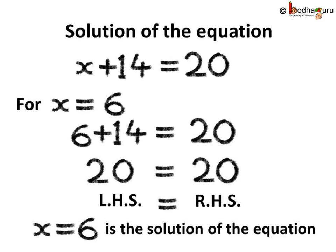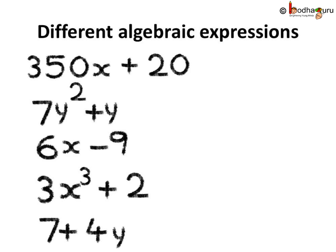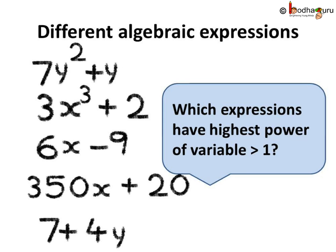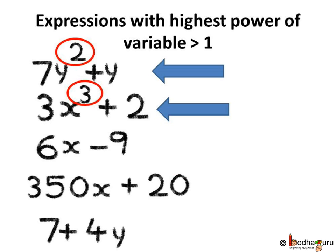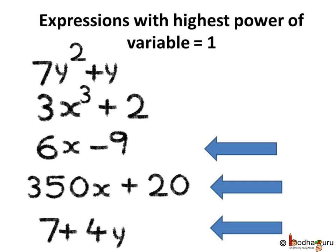Now let us see different algebraic expressions: 350x plus 20, 7y squared plus y, 6x minus 9, 3x cubed plus 2, and 7 plus 4y. Can you tell which expressions have the highest power of variable greater than 1? In the expression 7y squared plus y, y is the variable and the highest power of y is 2. In the expression 3x cubed plus 2, the variable is x and the highest power of x is 3.